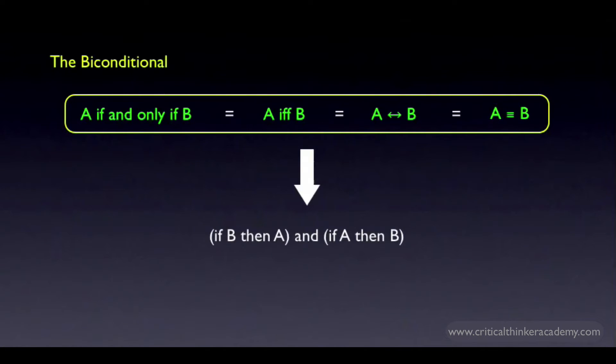This asserts that the conditional relationship runs both ways. Given A, you're allowed to infer B, and given B, you're allowed to infer A. It's not surprising then that this is also called a biconditional.